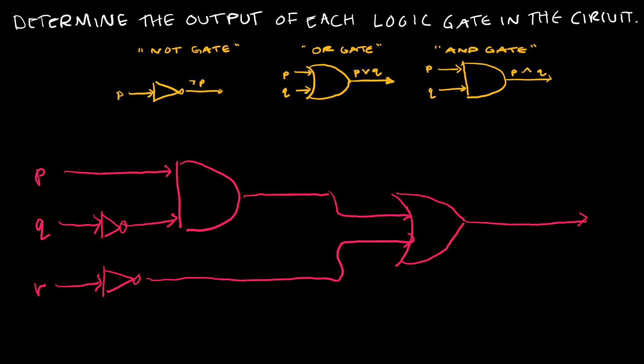So for our first example, I've set up a logic circuit for you. What I want you to do is determine the output of each logic gate and then the overall output. We're going to go through this one together, but this is just good practice. Notice P is going directly into this AND gate. I've given you the cheat sheet up here at the top so you can see what the three gates are.